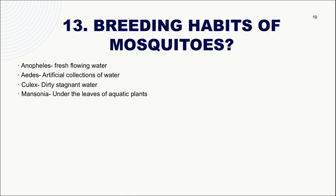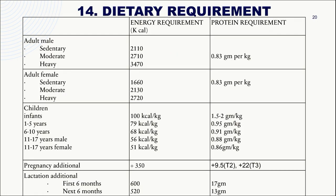Regarding mosquito breeding habits: Anopheles prefers fresh flowing water; Aedes prefers artificial collections of water; Culex prefers dirty stagnant water; and Mansonia prefers the rootlets of certain aquatic plants. The next important topic is dietary requirements, covering separate energy and protein requirements for adults.